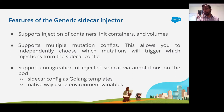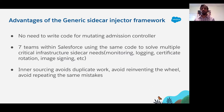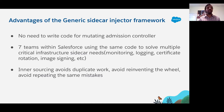So what are the advantages of this generic sidecar injector? There's no need to write code for injecting a new sidecar, which can be easy to get wrong. In one of our earlier KubeCon talks on war stories, I talked about how a small invalid patch in a mutating admission controller brought down a whole cluster. Seven teams within Salesforce are using the same code to solve multiple critical infrastructure sidecar needs like monitoring, logging, certificate rotation, and image signing. Inner sourcing avoids duplicate work, avoids reinventing the wheel, avoids repeating the same mistakes, and allows teams to collaborate more closely on code, configuration, and design.